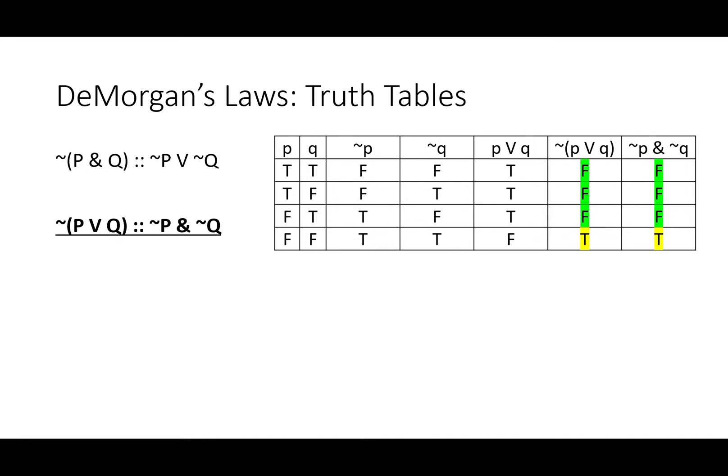The second line, neither P nor Q, is logically equivalent to not P and not Q. Well, this one is true when P and Q are both false. If either one of them is true, as in lines one through three, it's false. The important thing to know, of course, is that the truth values for either side are the same.